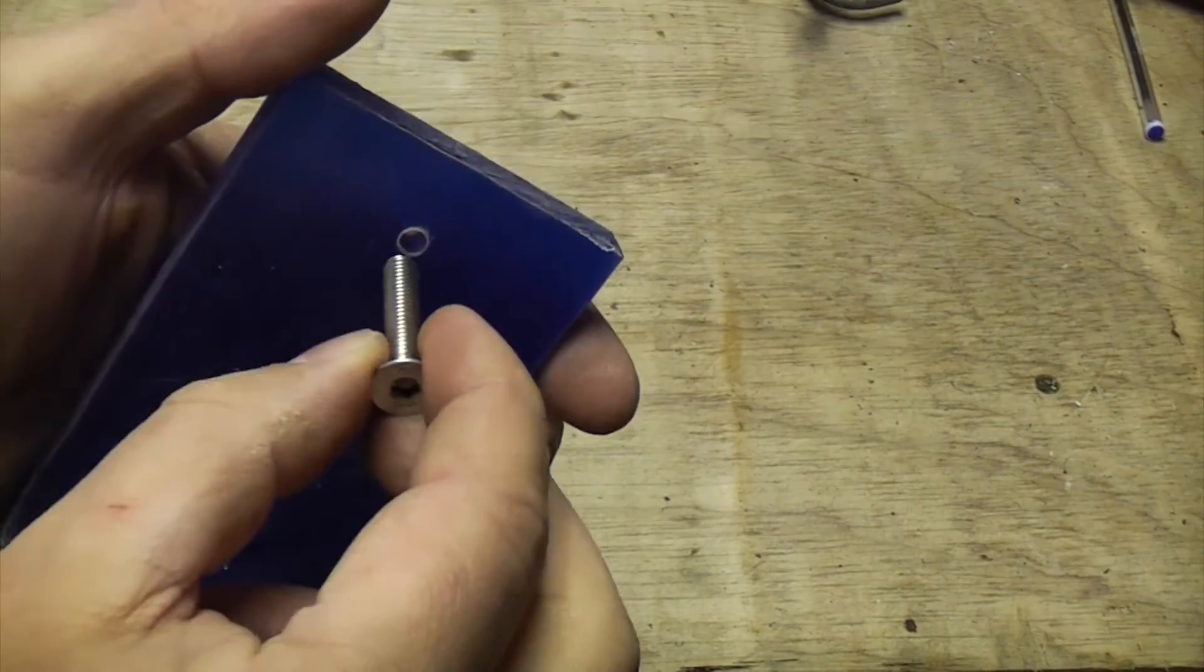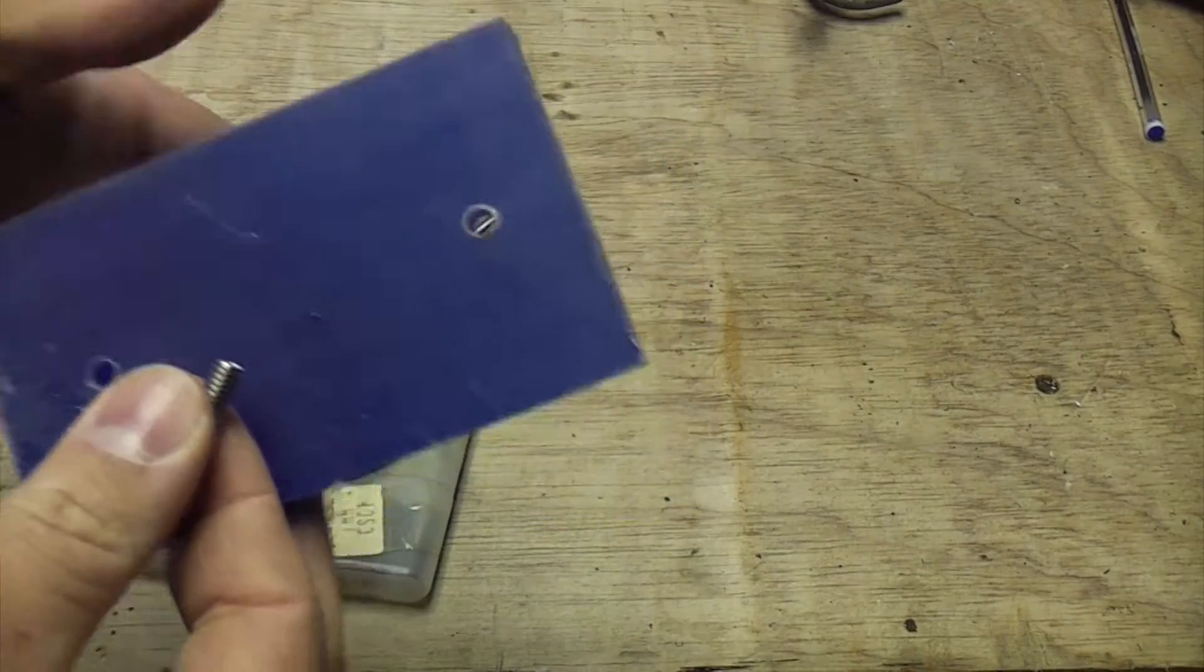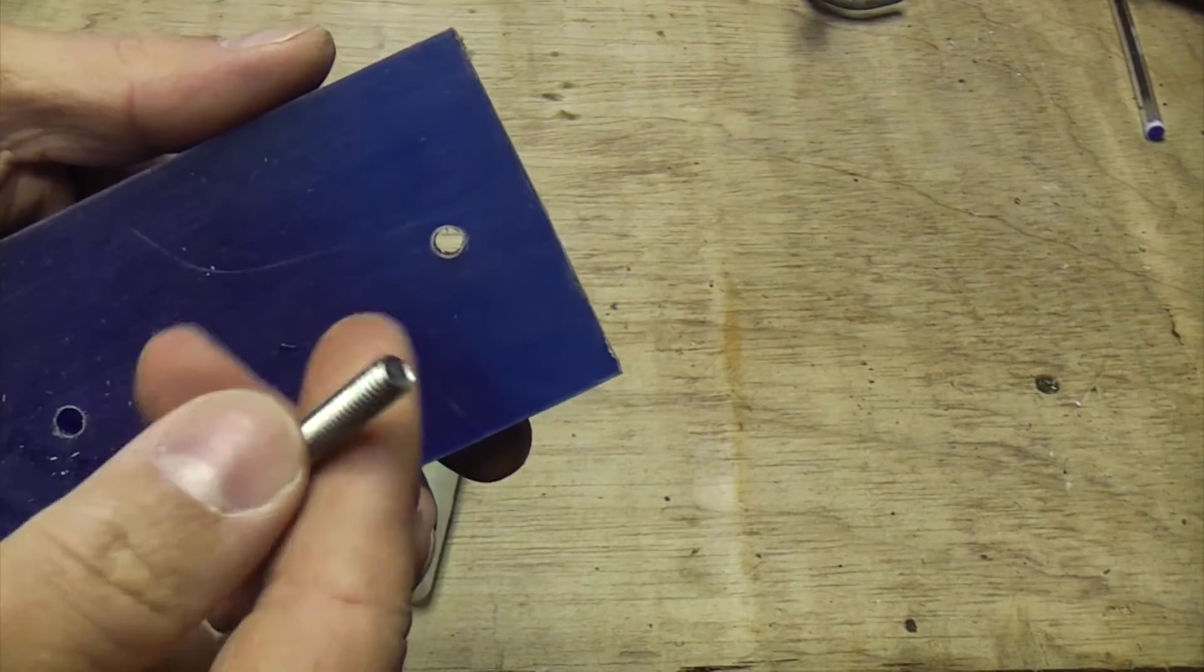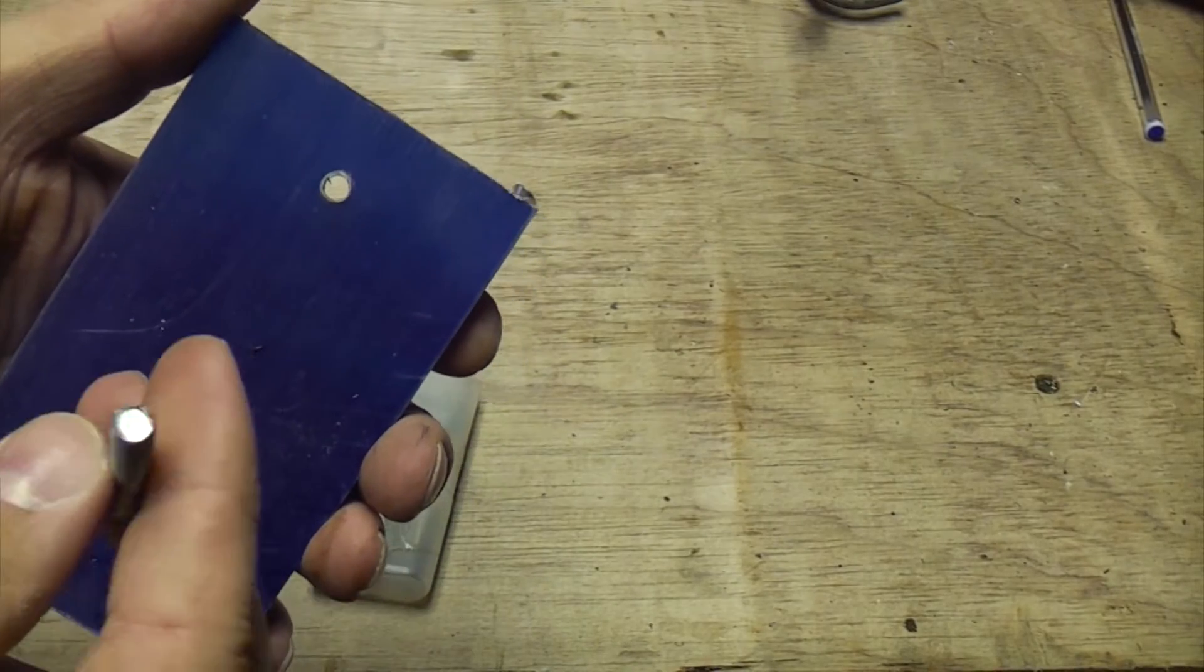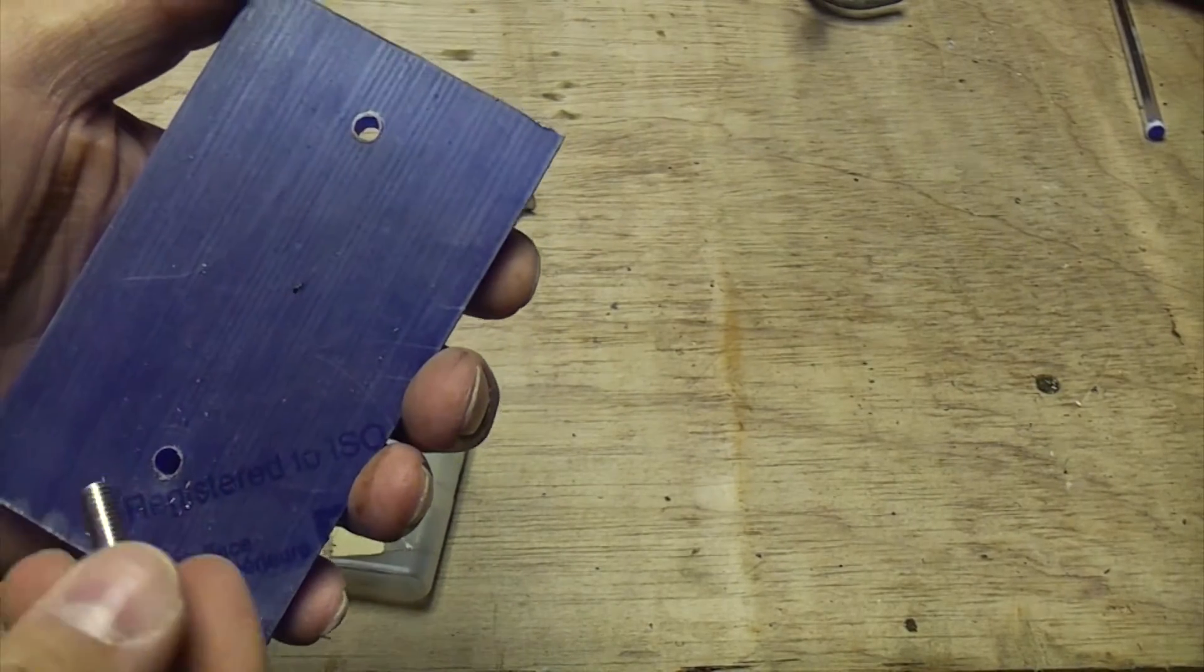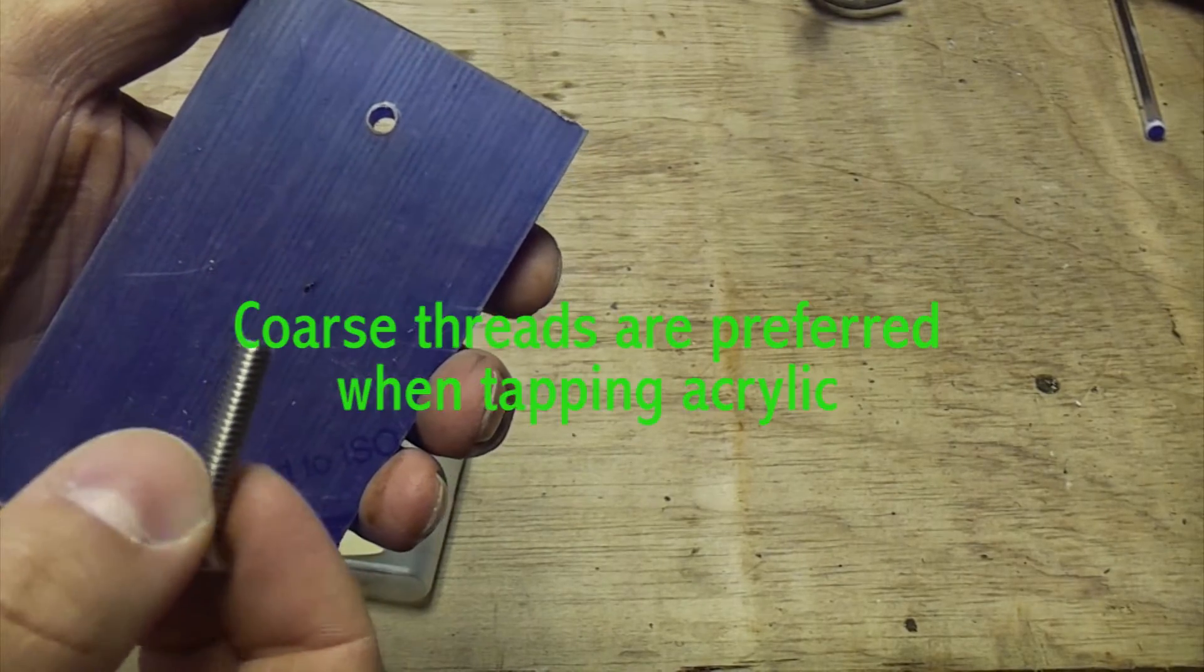It's quite easy to cut a thread in there so that you can put that screw in there. The important thing you've got to watch out for is drilling the correct size hole for the screw that you're using. Really what you need to do is consult a guide that tells you what size drill bit you need to use for which thread you're going to be tapping.